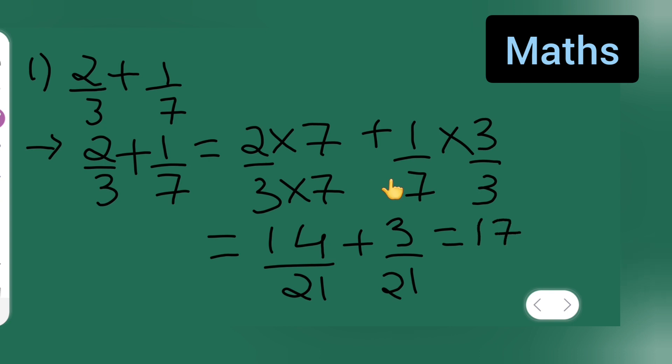17 upon 21 will be your answer. Or else I can do it like this way also - write down 14 plus 3 upon 21, which is nothing but 17 upon 21.